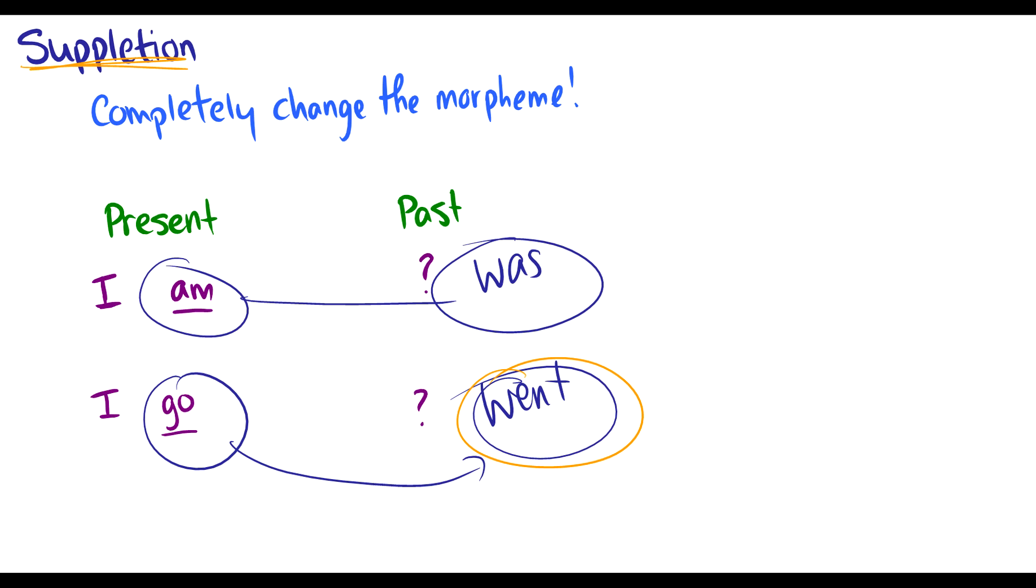That's an example of suppletion. Complete change of the word. So no affix, just complete change. No partial suppletion even. There's nothing in went that is resemblance of a g or an o. That's complete suppletion. So these occur with a lot of words in English. Be, is, was, will, won't. I'm trying to think of some others, but these two are the primary examples.